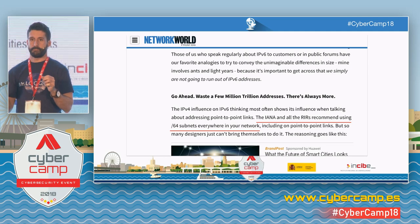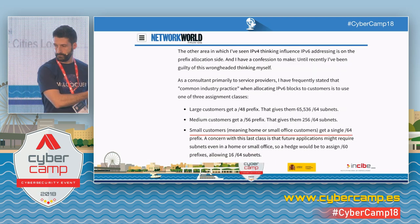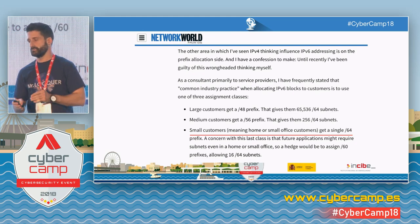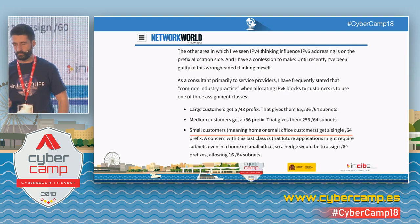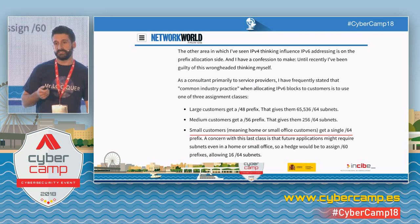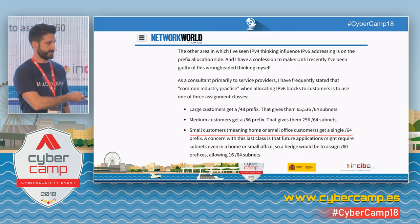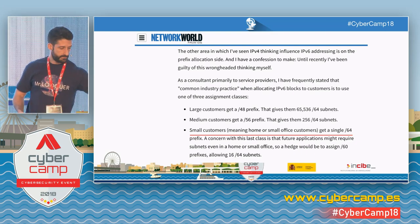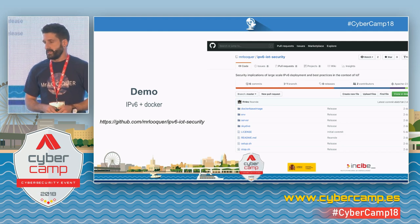In IPv4 we have the network address and the broadcast address — two addresses between the two devices. Large customers often get a /48 prefix; medium customers get a /46 prefix. By the time IPv6 reaches your home, you should be given a /64 prefix, which is great to play with. At very low cost you can have a good IPv6 with a /64 prefix, all for yourself.